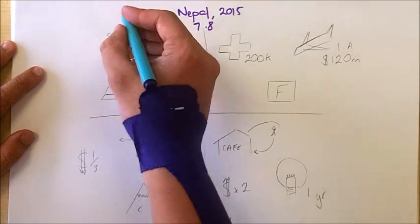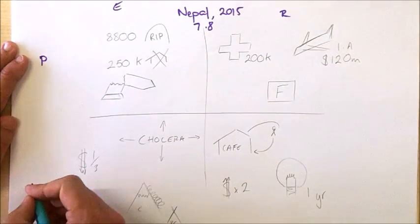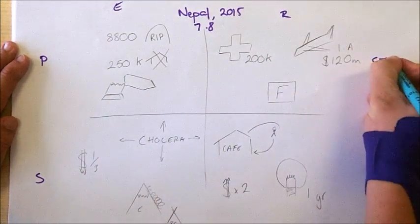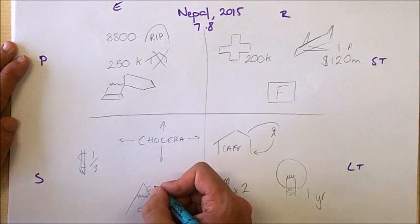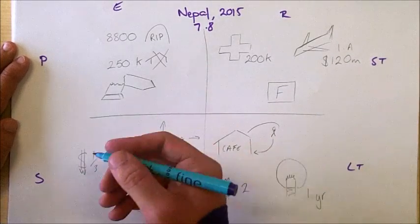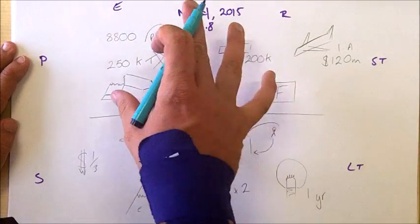I'm going to break those down into primary and secondary, short term and long term. So if we start off with the primary impacts, we want to keep this idea that we've got the similar structure. We want to go with a similar kind of impact, so we're going to talk about deaths first off.